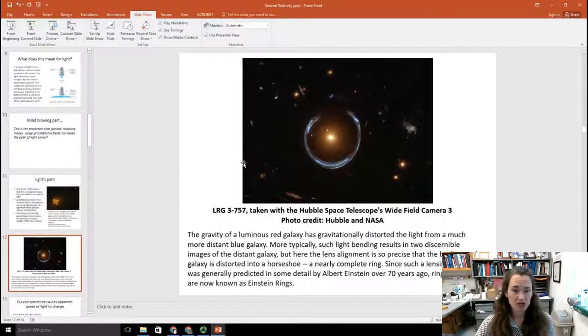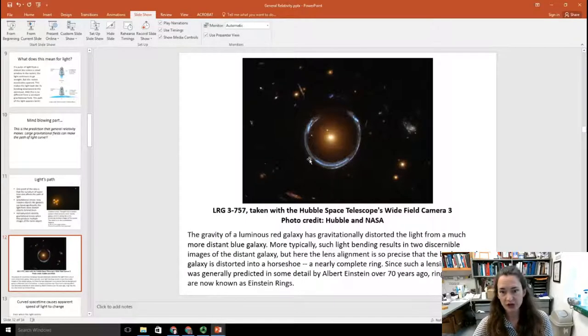A more beautiful example of that might be an Einstein ring, which is pictured here. This is object LRG3-757. And it was taken with Hubble Space Telescope's Wide Field Camera 3. So here you have the gravity of a luminous red galaxy, which is shown in the center of this little horseshoe-shaped object. And it's distorted, gravitationally, the light from a much more distant blue galaxy, which appears as a ring around the red galaxy. More typically, such light bending results in two discernible images of the galaxy. But here, the lens alignment is so precise and perfect that the background galaxy is distorted into a horseshoe, or nearly a complete ring. And this lensing effect was predicted in some detail by Einstein 70 years ago. And we can see these now, and they're called Einstein rings.